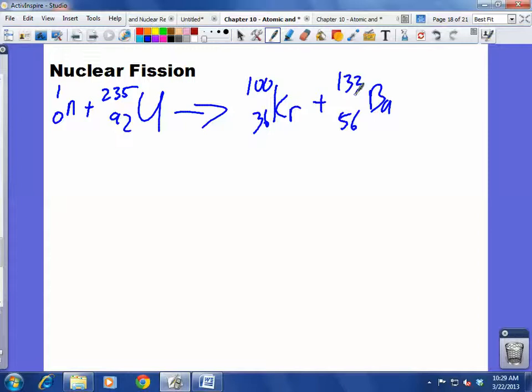Well, what's wrong? What am I missing here? What is wrong with this equation right now? Is the atomic number all right? Well, the atomic number is fine, right? 92, 36, 56. Yeah. Yeah, no, but you're right. The mass number is missing something. How many is the mass number missing? Not two. Three. We have 235 plus one, so 236, and 100 plus 133. So what we're actually missing here are three more neutrons.